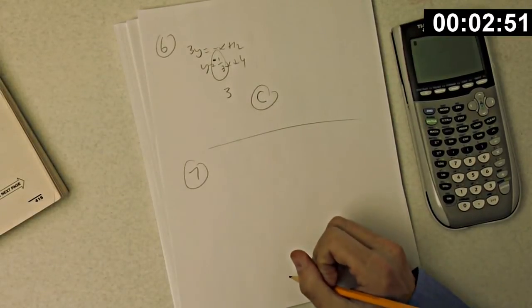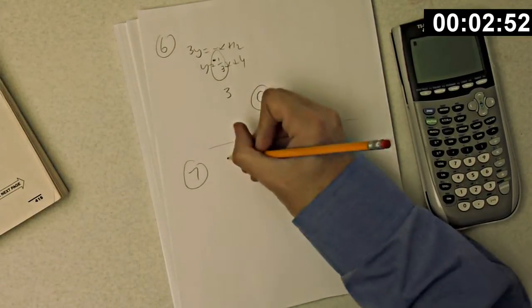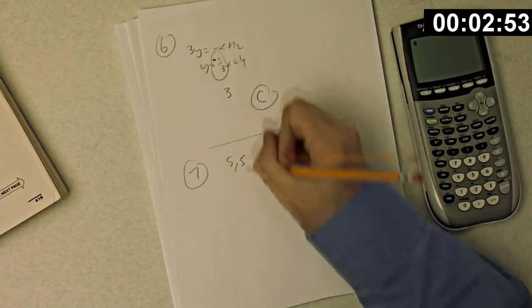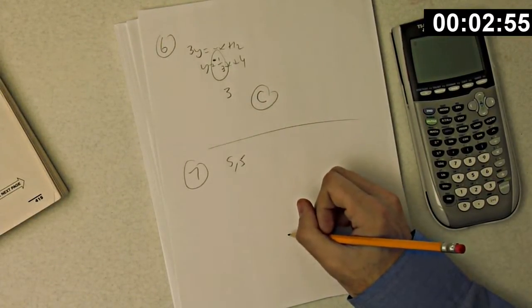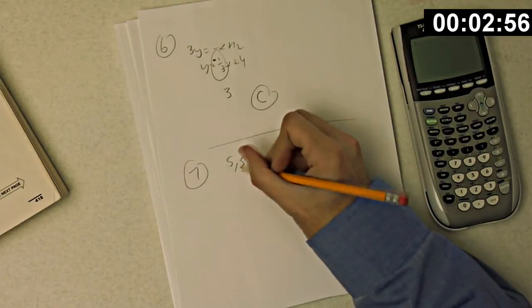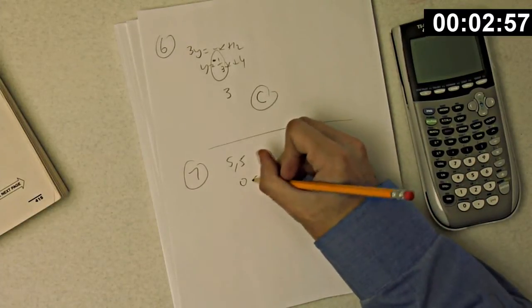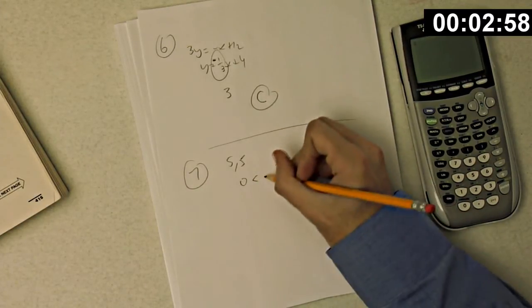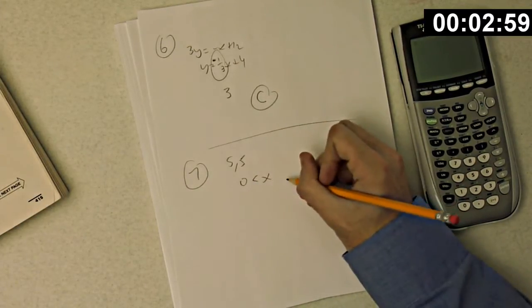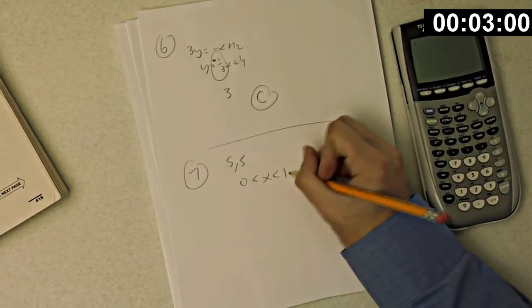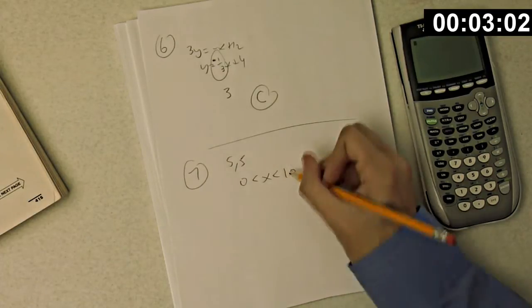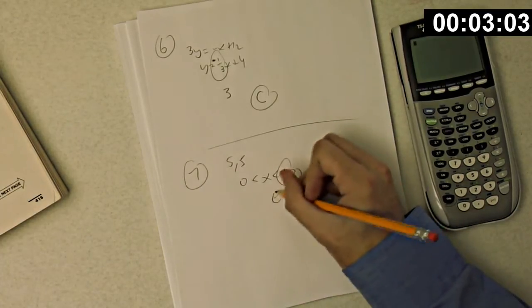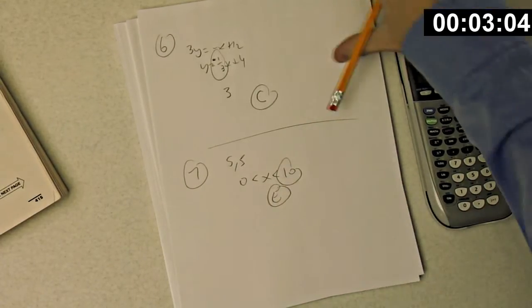Number seven. Two sides of a triangle each have length 5. All of the following could be the length of the third side except — using the triangle inequality rule, the difference is 0 and the sum is 10, so the third side can't be 10. Choice E.